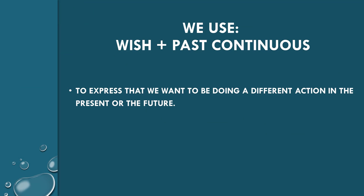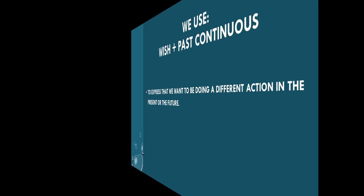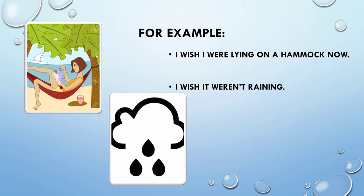We use wish plus past continuous to express that we want to be doing a different action in the present or the future. For example, I wish I were laying on a hammock now. I'm sitting in the office.